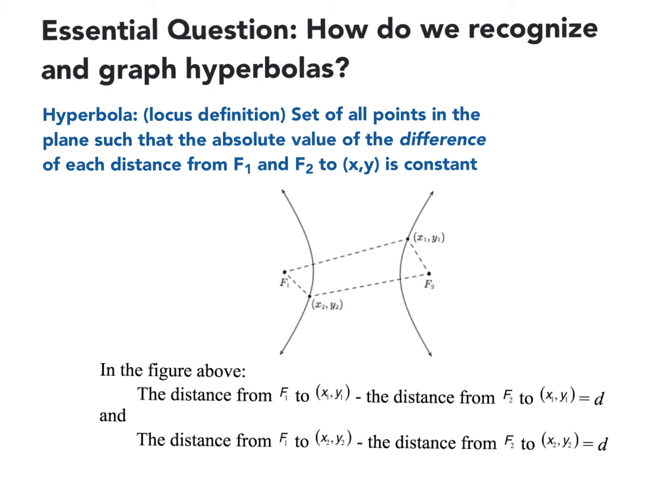Hey, in this video we're going to talk about how we can recognize and graph hyperbolas. A hyperbola is a set of all points in a plane such that the absolute value of the difference of each distance from the two foci is constant. So this minus this is equal to this minus this, which is basically what this says right here.